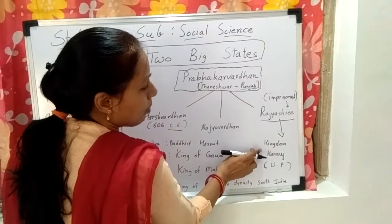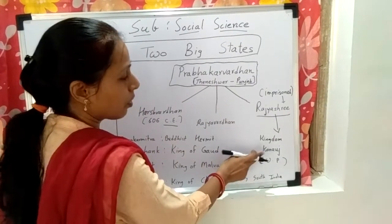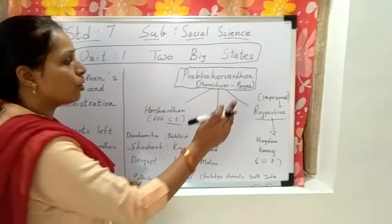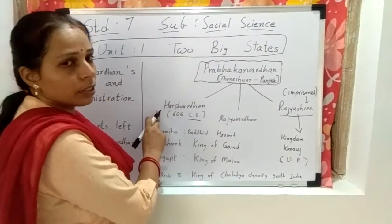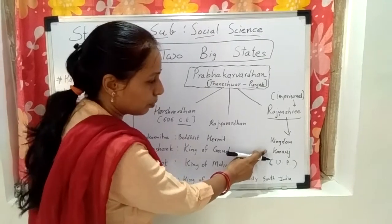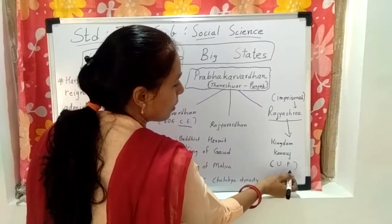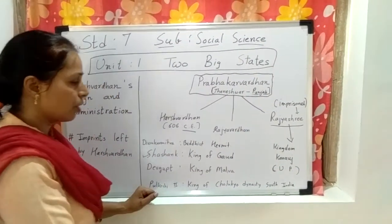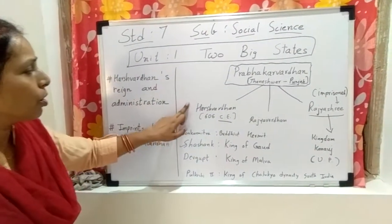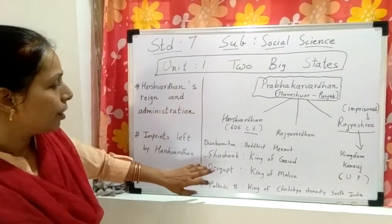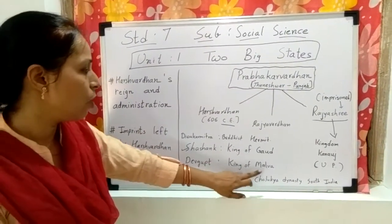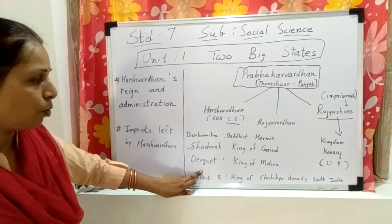Rajashri's kingdom, Kanauj, was without a king at that time. So Harshvardhan undertook the responsibility of Kanauj also. Kanauj is situated in Uttar Pradesh. After that, Harshvardhan defeated the king of Gaur, Shashank, and the king of Malwa, Devgup.